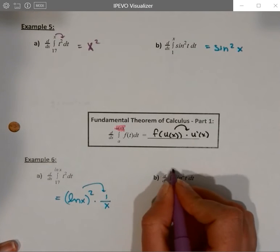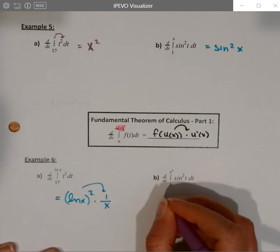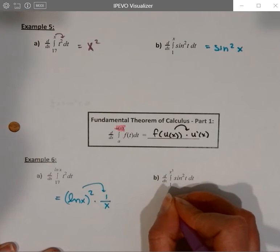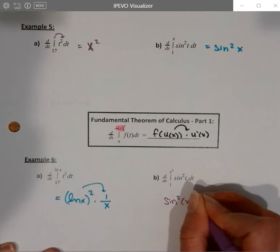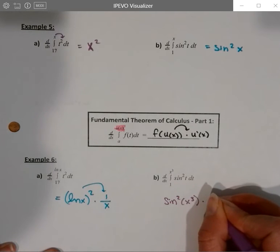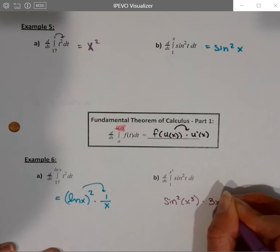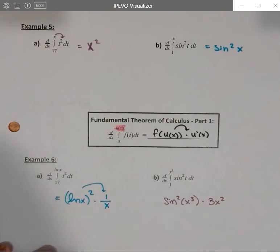We would have our sine squared t. We're going to replace t with x cubed, and if I'm differentiating it, we're going to multiply by its derivative. So we're going to have sine squared x cubed times the derivative of x cubed, which is 3x squared.